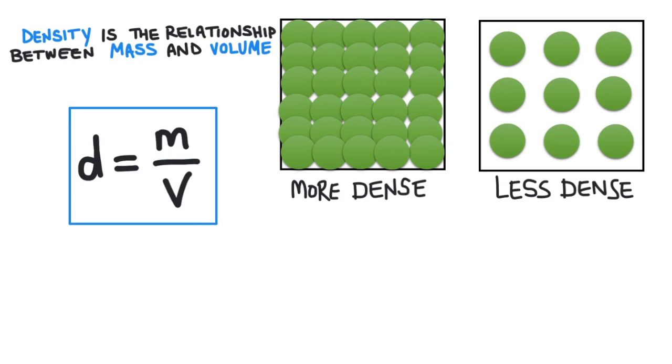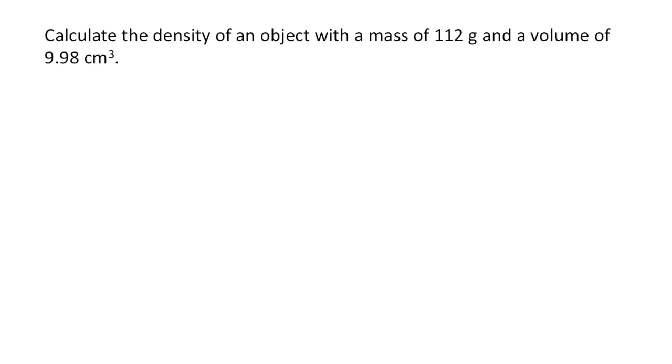Here's a kind of homework question you would need to solve for your chemistry class. Calculate the density of an object with a mass of 112 grams and a volume of 9.98 centimeters cubed. Before I start to solve a question like this, I like to try to organize the information first.